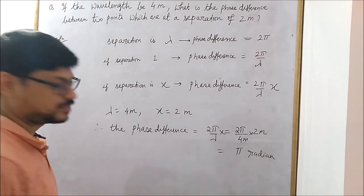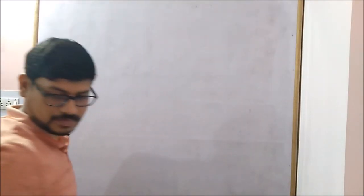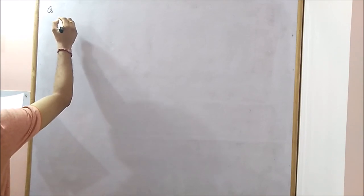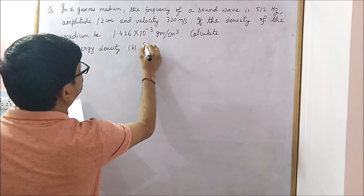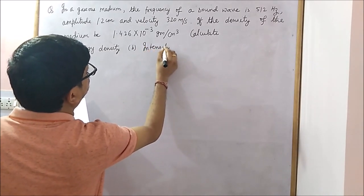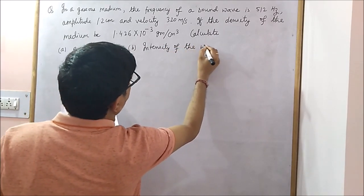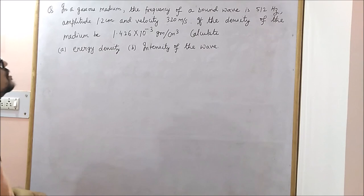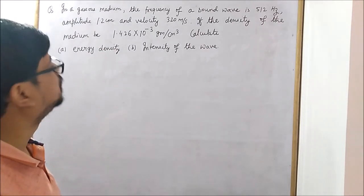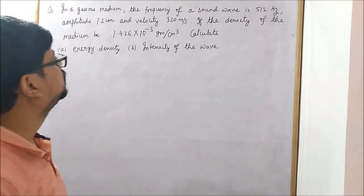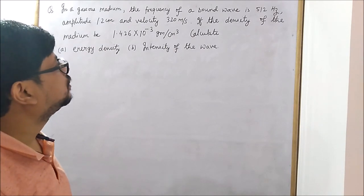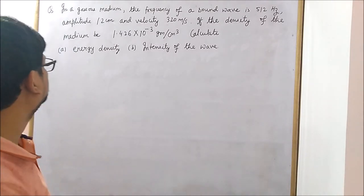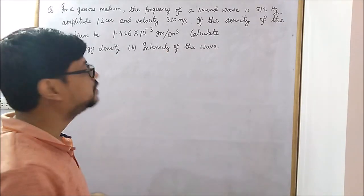Now we shall go to the next problem. In a gaseous medium, the frequency of a sound wave is 512 Hertz, amplitude 1.2 cm, and velocity 320 meter per second. If the density of the medium is 1.426 into 10 to the power minus 3 gram per centimeter cube, calculate a) the energy density and b) the intensity of the wave.